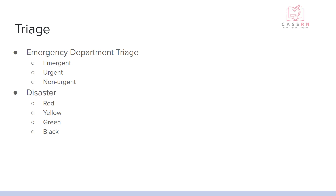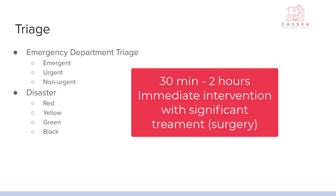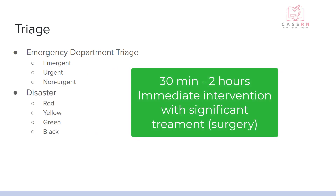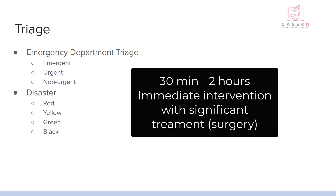In disaster triage, four colors of tape are used: red, yellow, green, and black. Red indicates someone who needs immediate attention within 30 minutes to two hours — for example, internal bleeding. Yellow indicates someone who can wait longer than two hours but still needs significant treatment, such as a broken arm requiring surgery. Green is the 'walking wounded' — minimal injuries requiring little attention. Black means not expected to survive with the available resources.